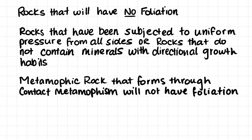Some metamorphic rocks will not present foliation. These rocks have been either subjected to uniform pressure from all sides, not subjected to pressure at all — as in the case of contact metamorphic rocks — or they do not contain minerals with directional growth habits. Metamorphic rock that forms through contact metamorphism will not have foliation, as it will not be subjected to pressure.